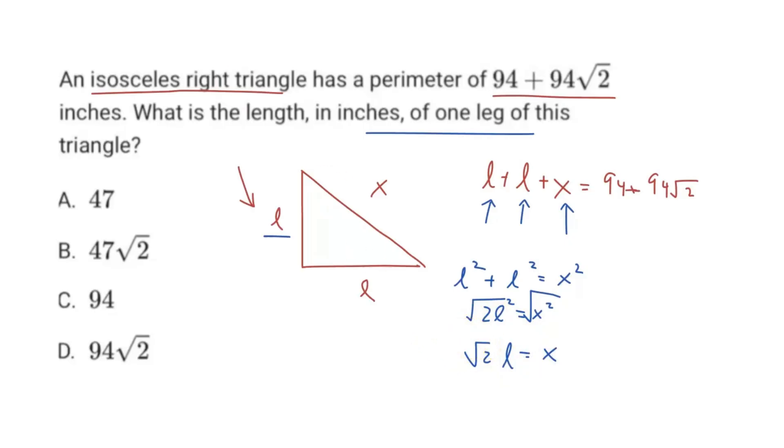So we can rewrite this part up here. Instead of x, we can just replace it with this form square root 2 times the length, right like this. And then what we can do is to avoid a bunch of algebra is to just call our length a random variable, let's just say x. So now it's all like terms, and then solve for the value of x or length.